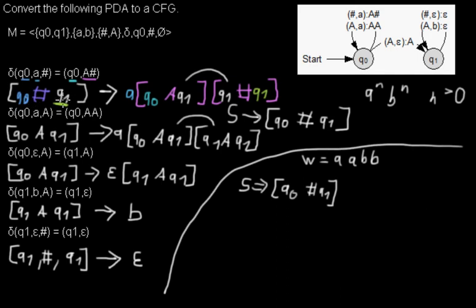So I can replace these non-terminal symbols by a and by those two. So I get an a and I get those two: q0, a, q1, q1, stack symbol, q1.